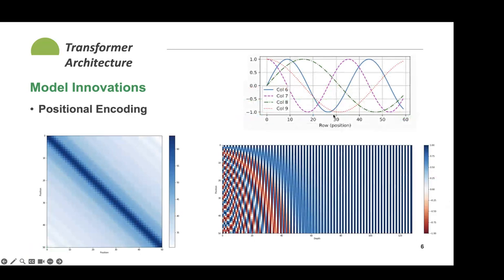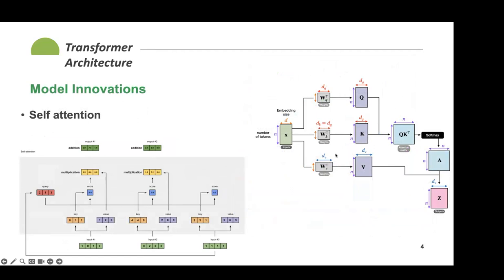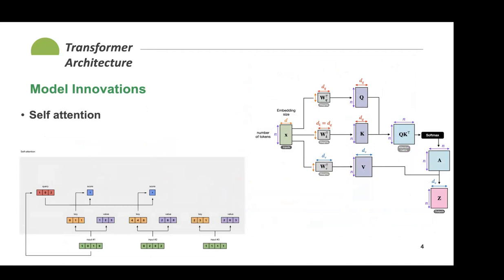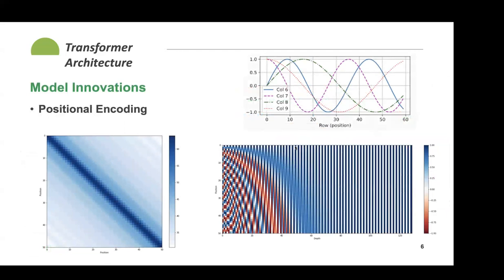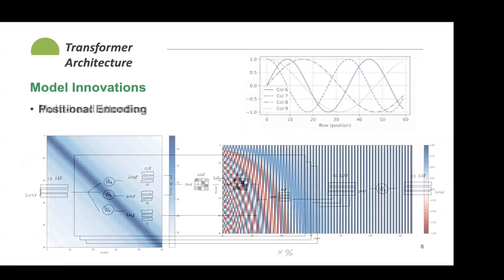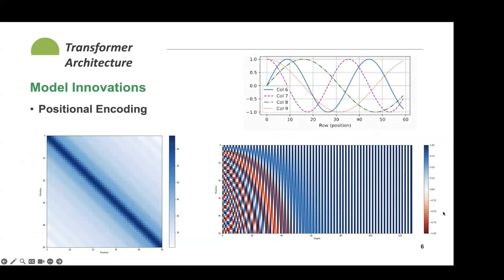One thing not implemented in self-attention as described is any degree of positional relevance between words. If two words are close or far apart, self-attention weights them exactly the same — it only cares about semantic similarity. So we add a positional encoding: a vector of the same dimension D as the word embedding, added to every word depending on its position in the sentence. This augments the word embedding so the model now encodes the position of that word.